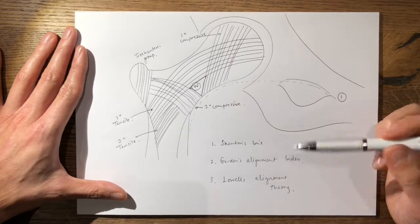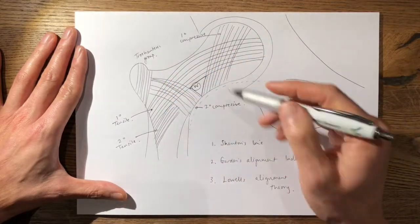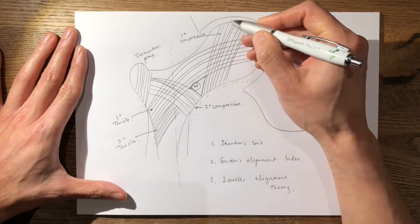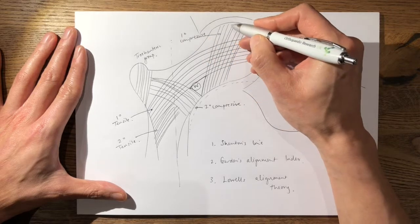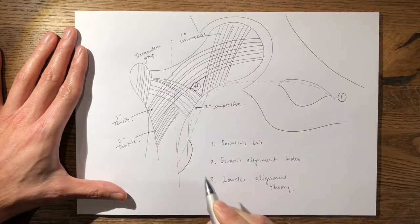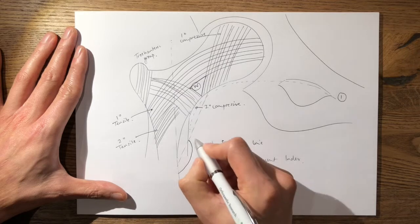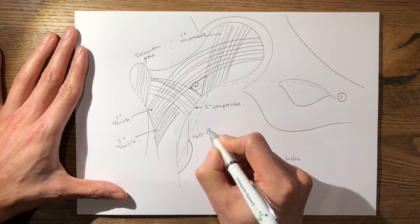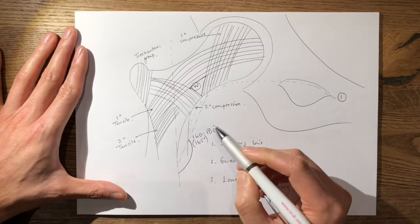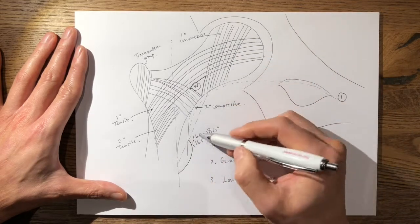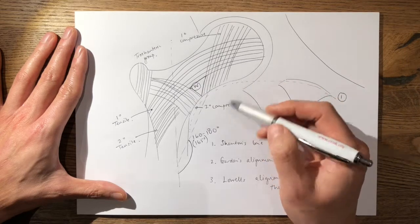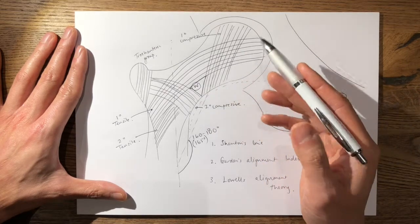Garden's alignment index is the angle formed on the AP view from the vertical shaft of the femur and the trabecular patterning of the primary compressive group. So if I draw this line down here, like so, this angle here, according to Garden's alignment index, should be between 160 to 180 degrees. It's usually around 165 degrees. So you'd know that if this angle was less than 160, you'd have a varus malreduction. And if it's greater than 180, you'd have a valgus malreduction. This is on the AP view.